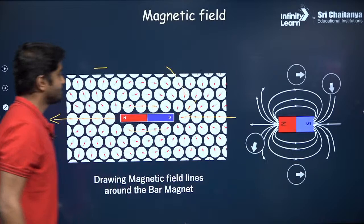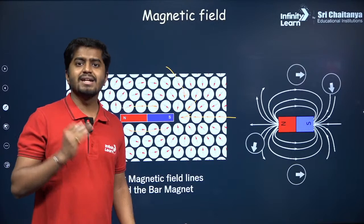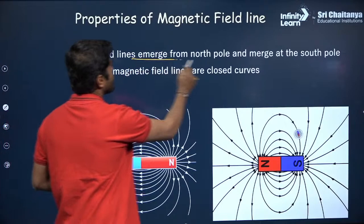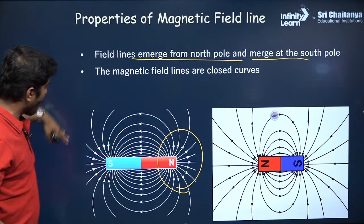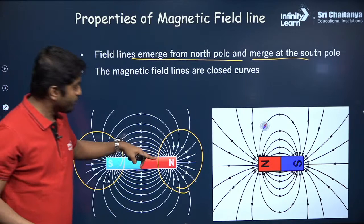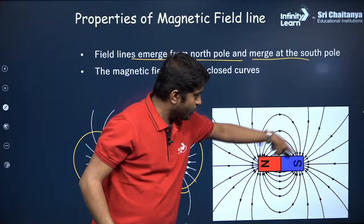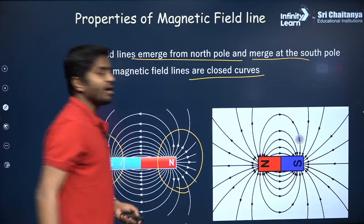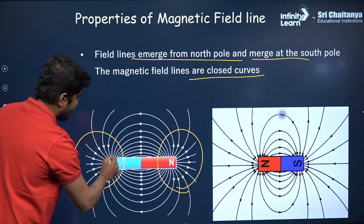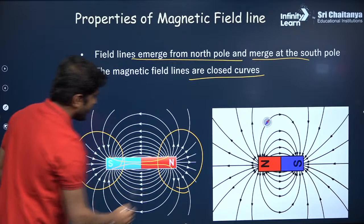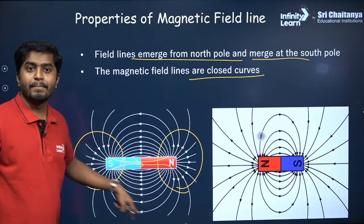Properties of magnetic field lines: field lines emerge from the north pole and merge into the south pole. They come out of the north pole and go inside the south pole. These magnetic field lines are closed curves — inside the magnet they go from south to north, making a complete loop. So these are all closed loops.